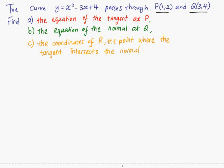In this question, you are given a curve y equals x squared minus 3x plus 4 which passes through the point P and Q.